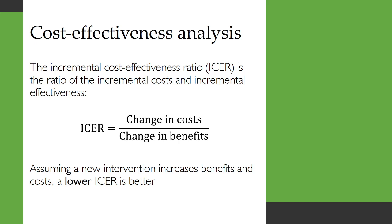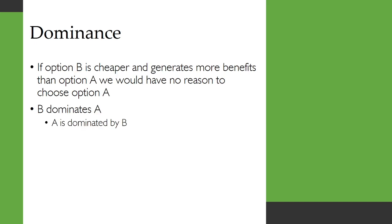Assuming that a new intervention increases benefits and costs, a lower ICER is better because it means the intervention is more efficient. There's a concept called dominance. If option B is cheaper and generates more benefits than option A, we would have no reason to choose option A. B dominates A and A is dominated by B. No matter what our cost-effectiveness threshold, we will always choose option B in this case.